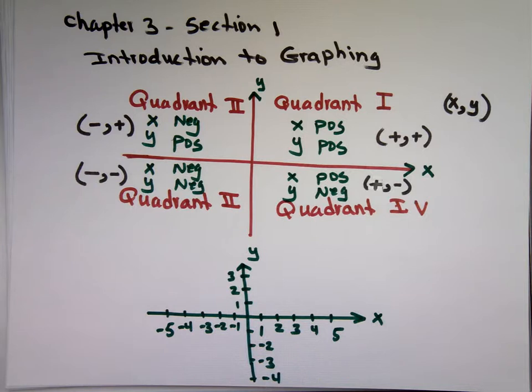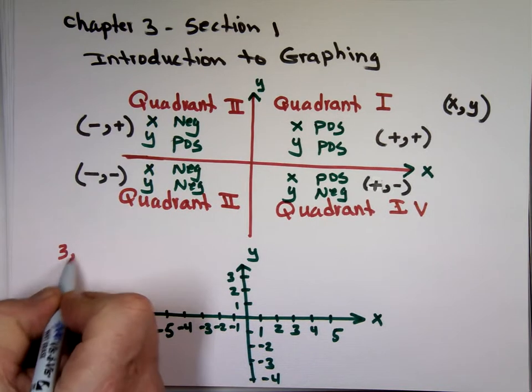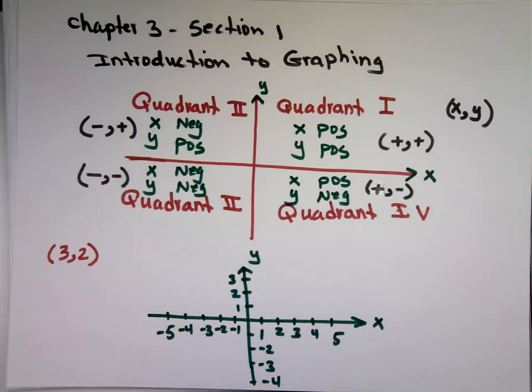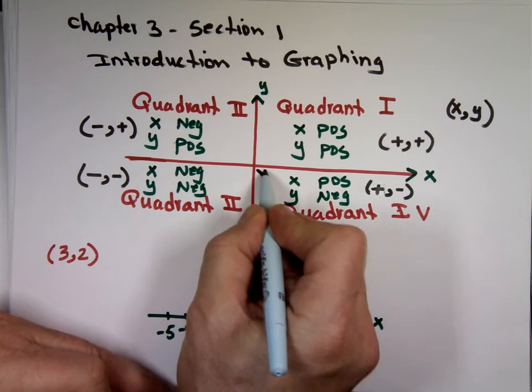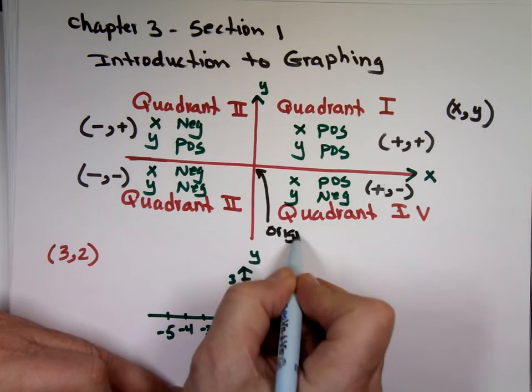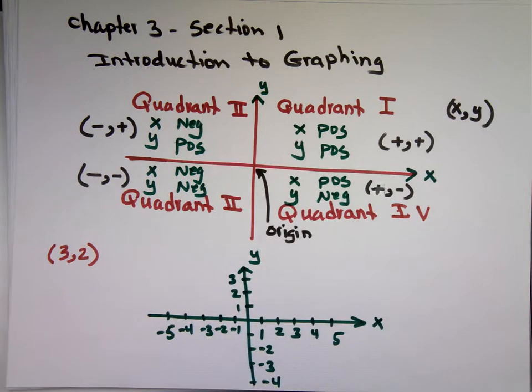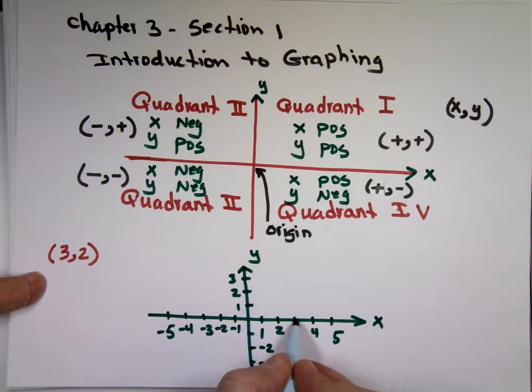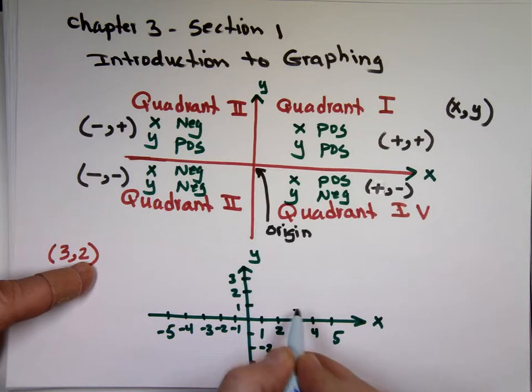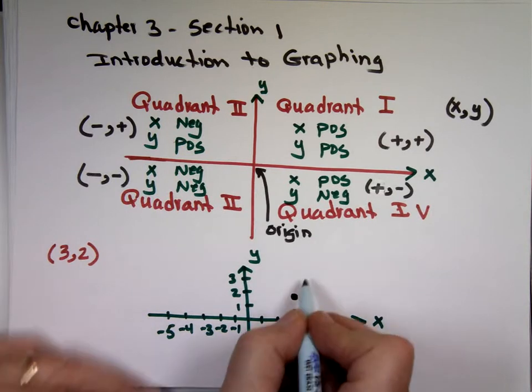So if I ask you to locate the point 3, comma, 2, the center, this point here, is known as what? That's the origin. So you start from the origin. You move 3 units, positive 3 in the x direction, plus 3 in the x direction. 1, 2, 3. Then you're going to move what? Plus 2 in the y direction. Plus 2, is that up or down? Up. So the point will be right there. That's where (3,2) is.